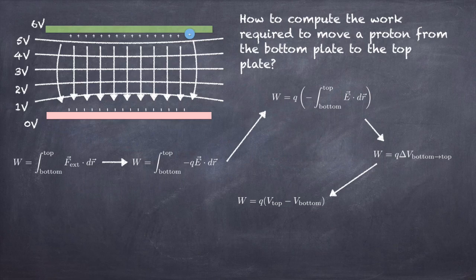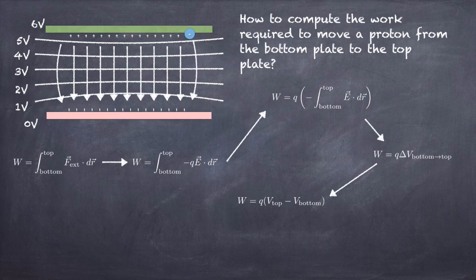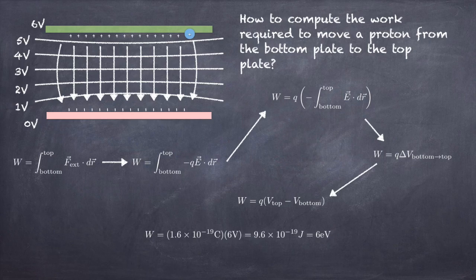That's also equal to the difference in electrical potential energy between the top and bottom plates — very similar to lifting a kilogram in a gravitational field, where the work equals the difference in gravitational potential energy. Since a proton has 1.6 × 10⁻¹⁹ coulombs of charge, moving it through a potential difference of 6 volts takes 9.6 × 10⁻¹⁹ joules of work, which is numerically equal to 6 electron volts. In other words, 6 electron volts is the work needed to move one elementary charge through a potential difference of 6 volts.